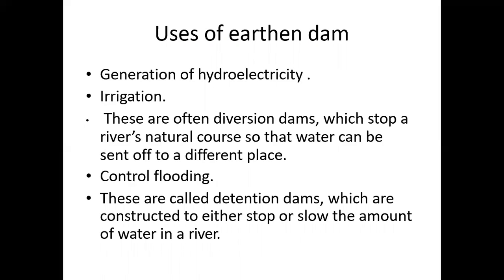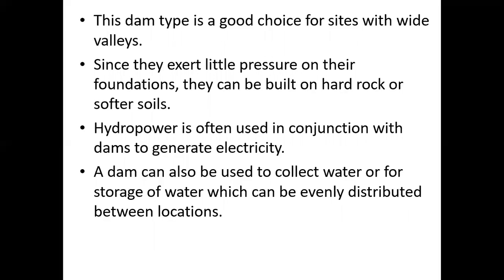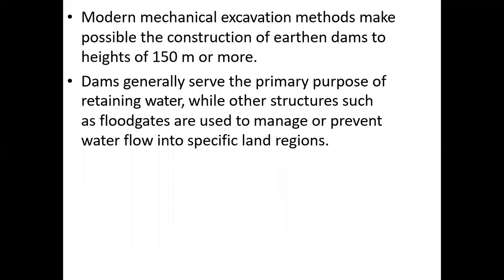Uses of earthen dams: generally earthen dams are used for generation of hydroelectricity, irrigation — as diversion dams which redirect the natural course so that water can be stored or directed to different places — and controlled flooding, using detention dams which stop or slow the amount of water in rivers. This type of dam is a good choice for sites with wide valleys since they exert lighter pressure on their foundations and can be built on hard rock or softer soils. Hydro power is often used in conjunction with dams to generate electricity. A dam can also be used to collect and store water and evenly distribute it between locations. Modern mechanical excavation methods make possible construction of earthen dams to a height of 150 m or more. Dams generally serve the primary purpose of retaining water, while other structures such as sluice gates are used to manage or prevent water flows into specific land regions.